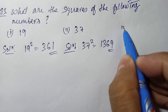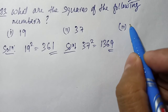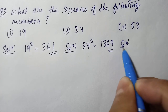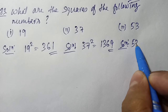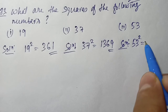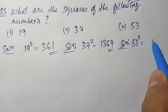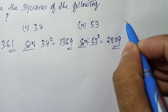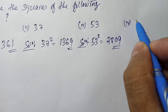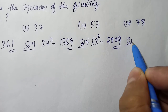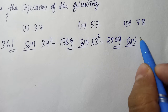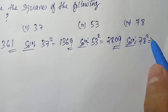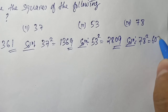Question number 3: we have 53. We need to make the square. 53 multiplied by 53 gives us 2809. Question number 4: we have 78. If you make the square, we multiply 78 into 78 and we get 6084.